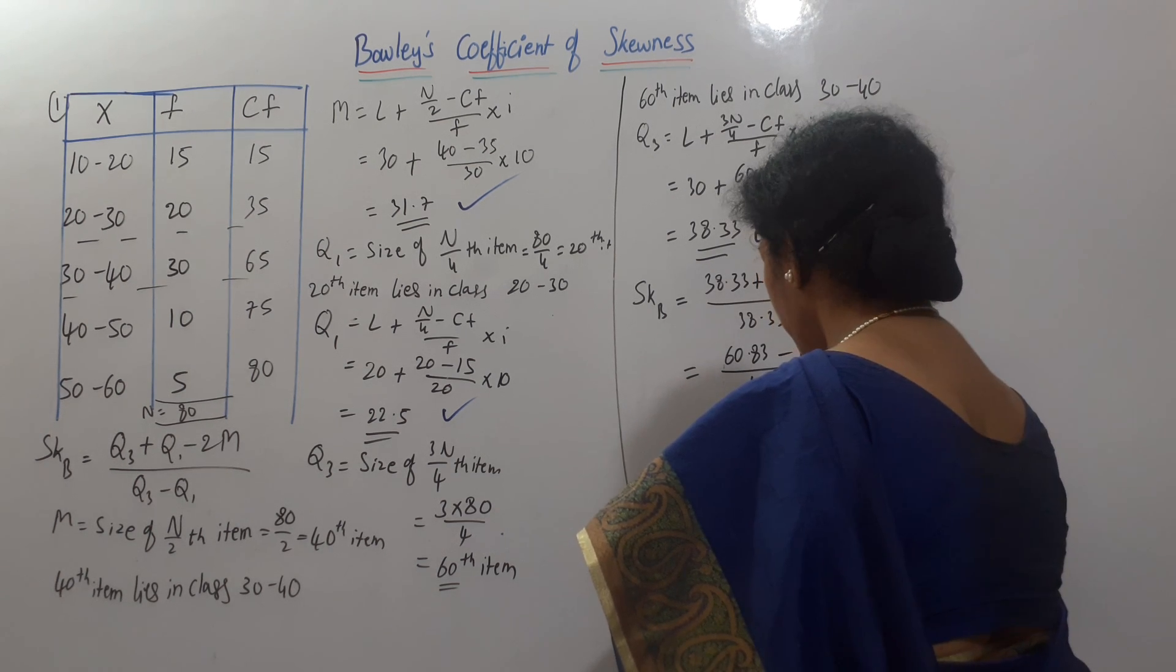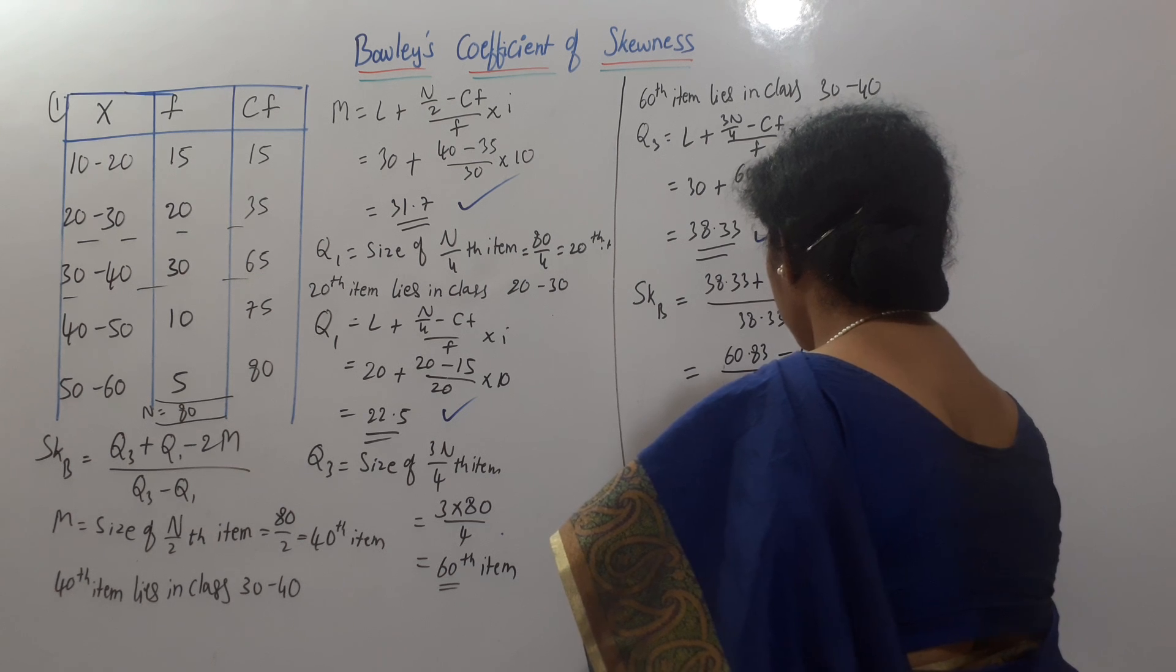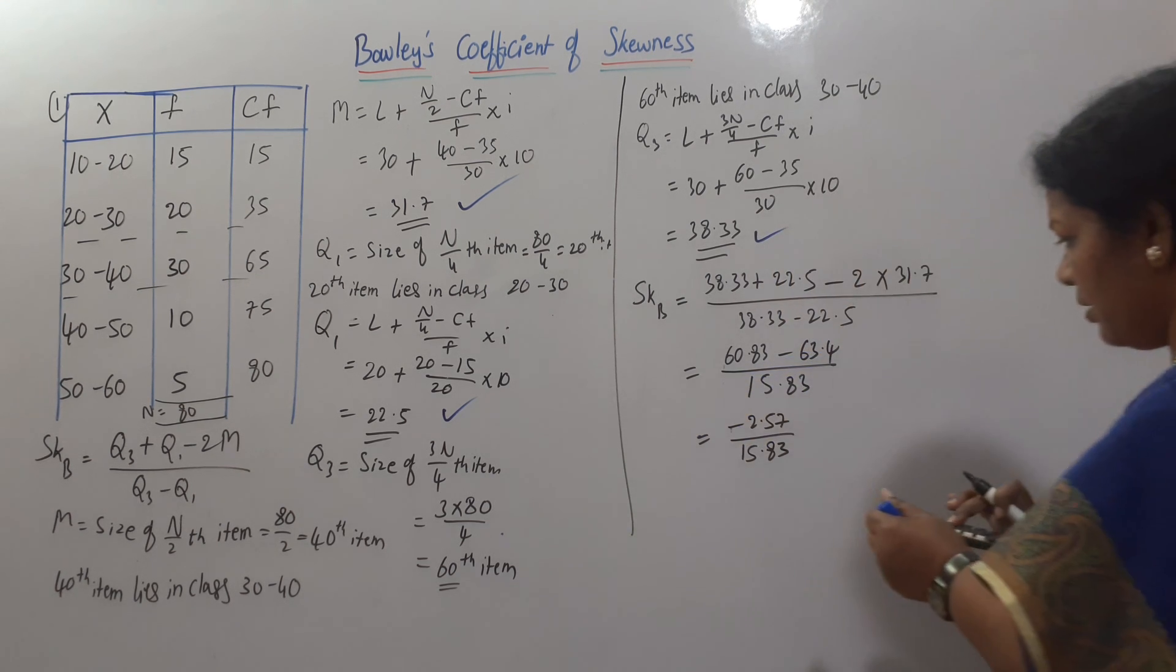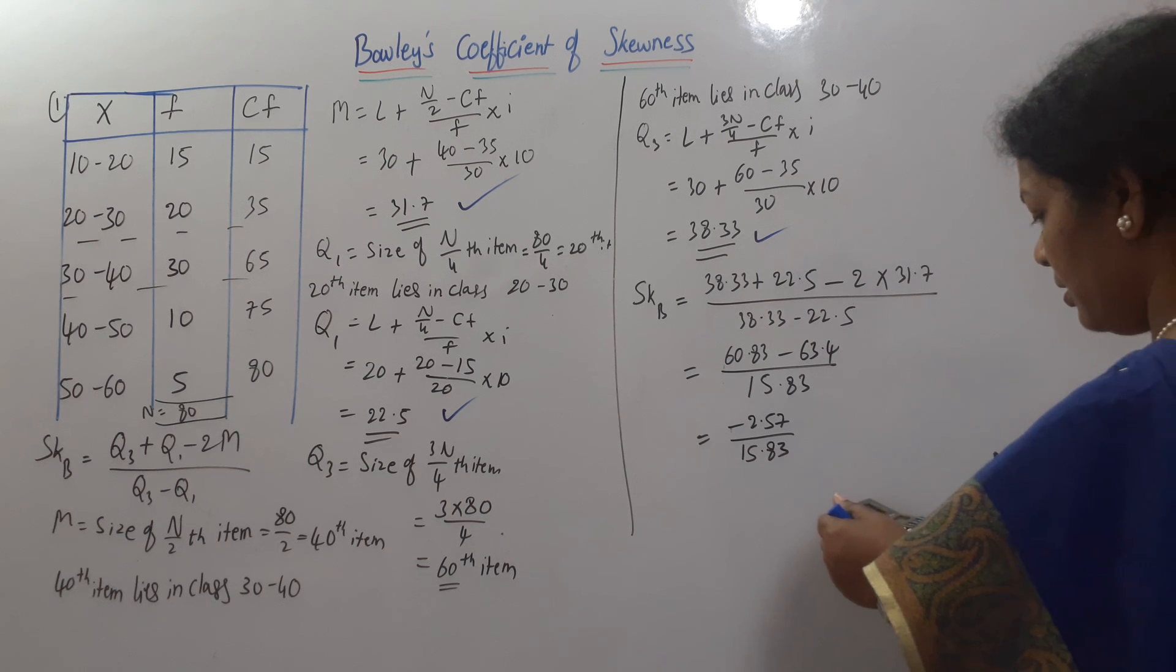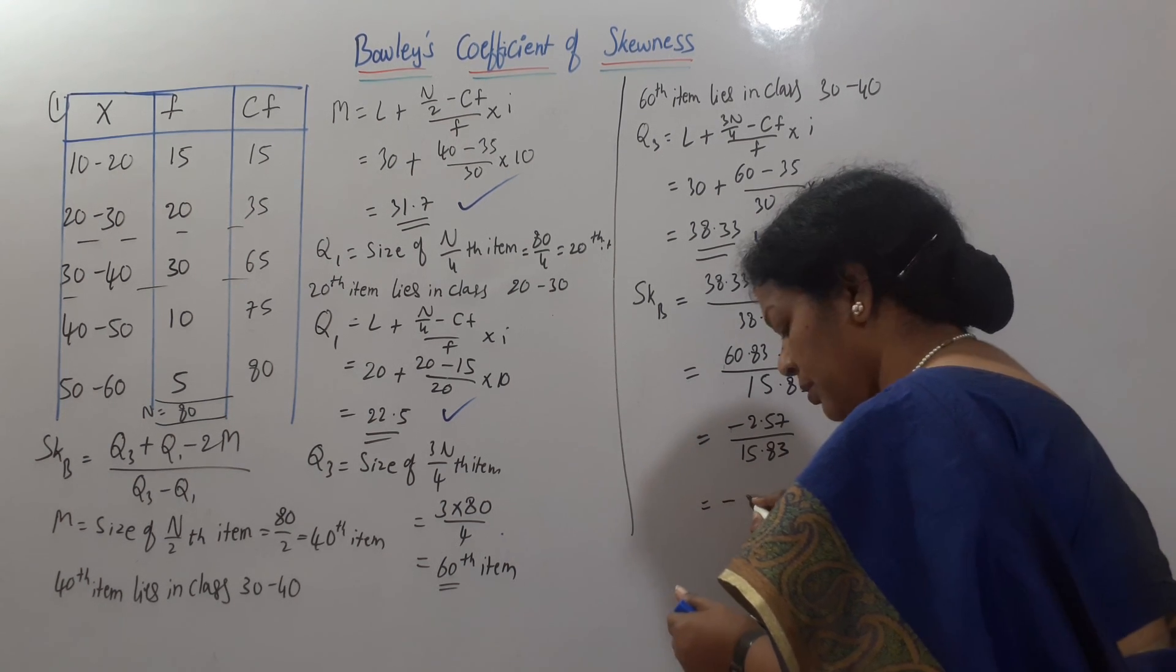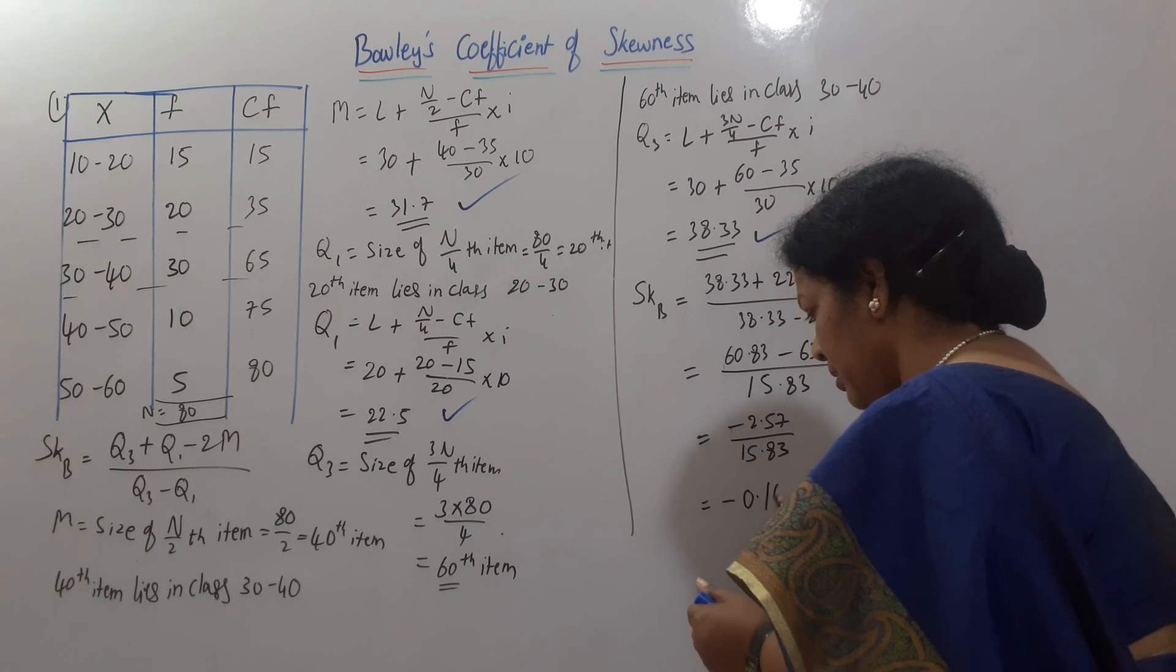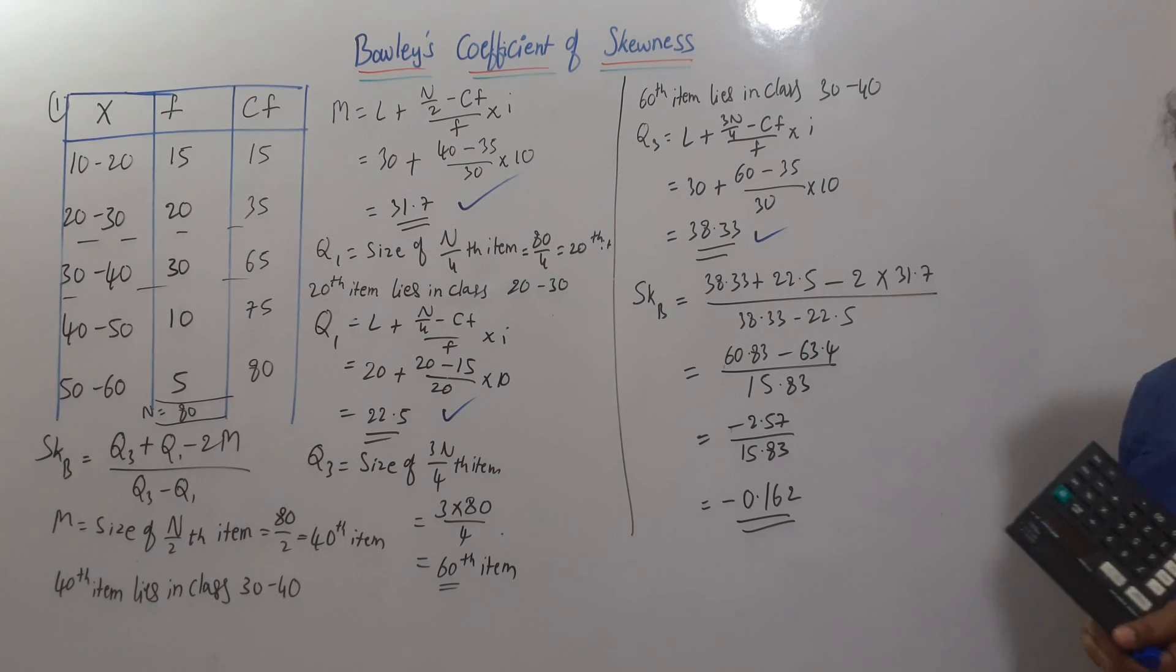So, this is minus 2.57 by 15.83, divided by 15.83. It comes to minus 0.162 also you can say. So, this is SKB.